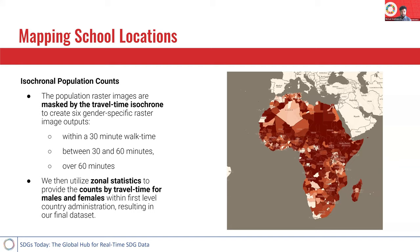Once we have the school-age population raster images, we overlay them with our isochrone travel time layers to get isochronal population counts. The population raster images are masked by the travel time isochrone to create six gender-specific image outputs: males within a 30-minute walk time, between 30 and 60 minutes, over 60 minutes, and the same for females. That masking essentially removes all data that does not exist within a specific isochrone time grouping. We then utilize zonal statistics to count all the cells providing population counts for the specific demographics, so we end up with counts by travel time for males and females within first-level country administration. This ultimately results in our final data set.